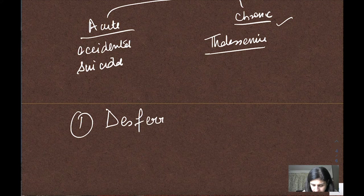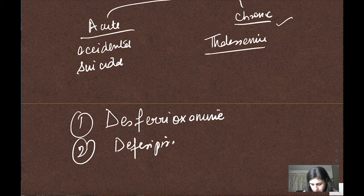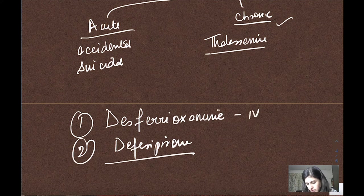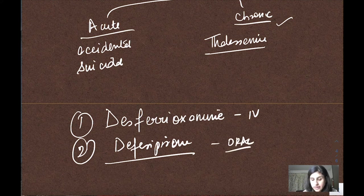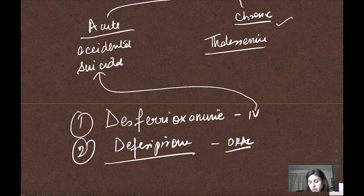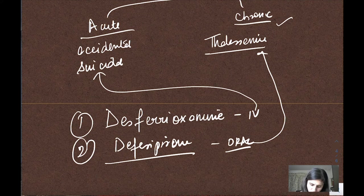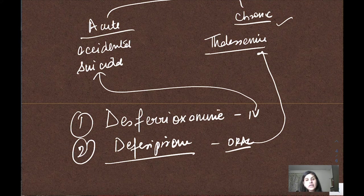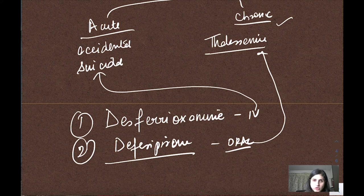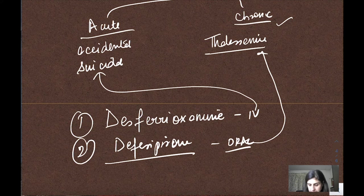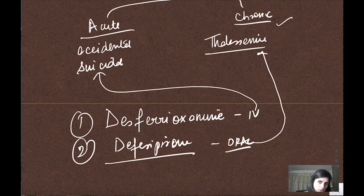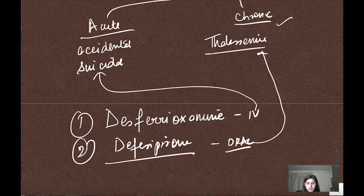The iron chelators are: desferioxamine, which is IV, and deferipyrone, which is oral. In acute toxicity - accidental or suicidal poisoning - you cannot wait for an oral drug in an emergency, so you give the IV drug. In chronic cases you have the option to give the oral drug. Though it's not as efficacious as desferioxamine, if results are good you can continue. If it's not able to take care of the iron overload, switch to the IV option. Another problem with iron is sometimes allergic reactions due to histamine release.